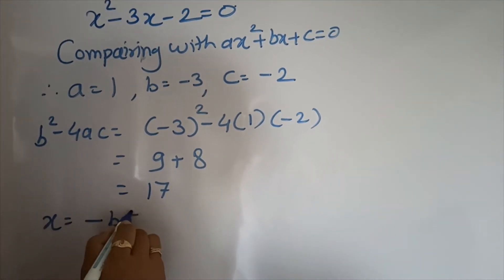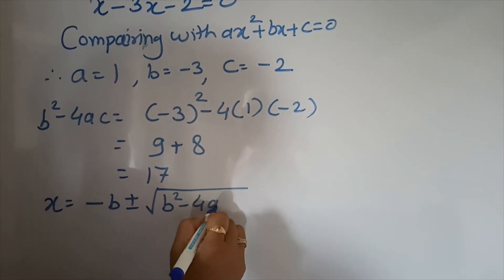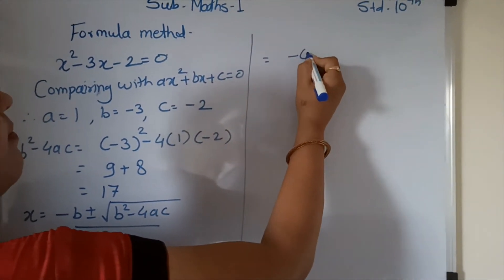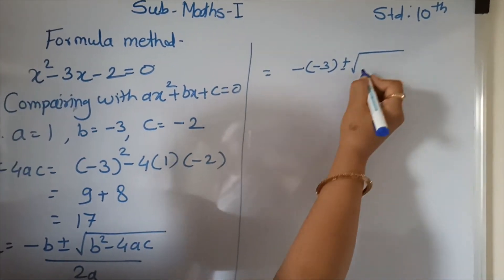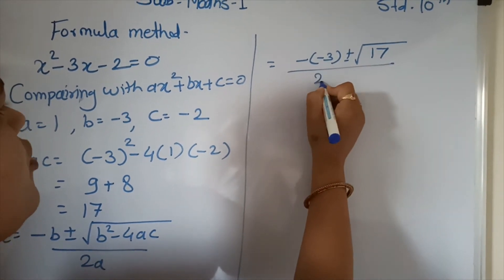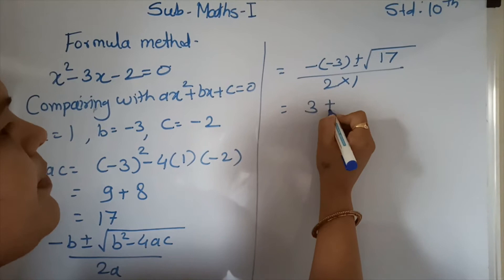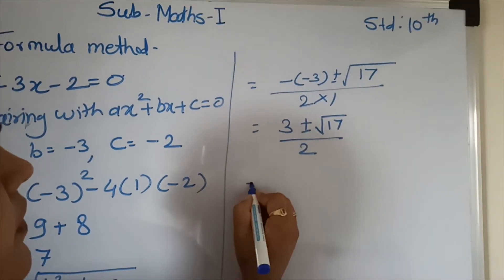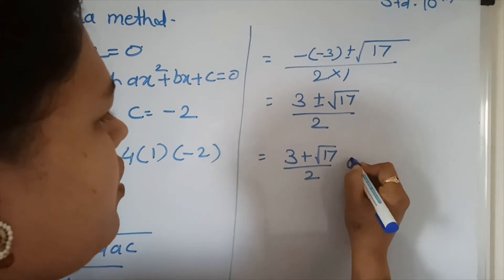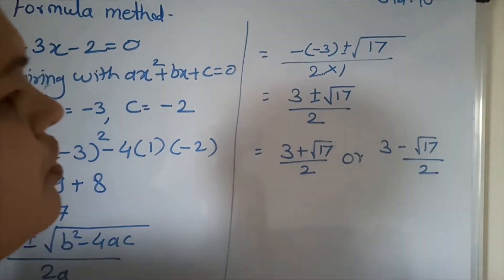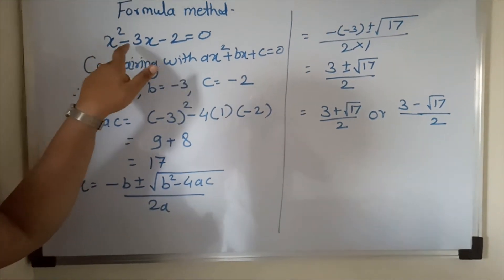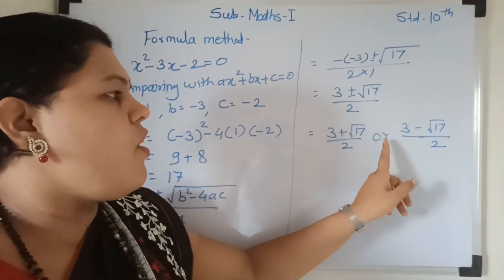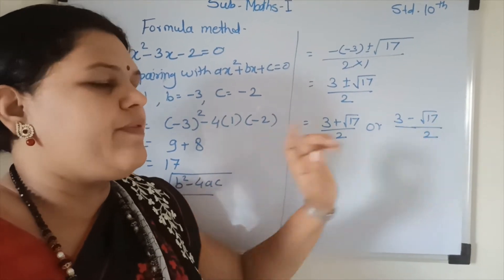Using our formula: x is equal to minus b plus minus under root of b square minus 4ac upon 2a. Minus b means minus of minus 3, so plus 3. Plus minus under root of 17 upon 2 into 1. Under root of 17 stays as it is upon 2. Therefore the equation x square minus 3x minus 2 equal to 0 has roots x equal to 3 plus under root of 17 upon 2, or x equal to 3 minus under root of 17 upon 2.